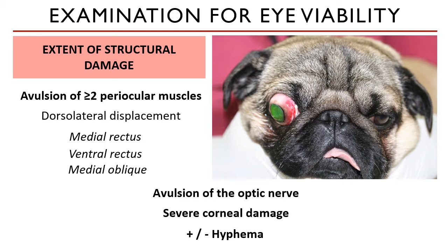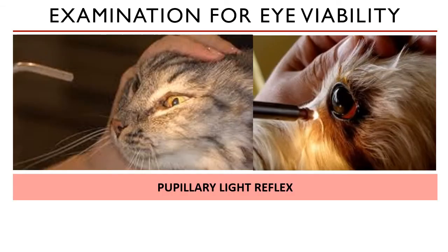The presence of hyphema is also a sign of damage to the ciliary body. Hyphema is the presence of blood inside the eye — you can actually see it from the outside; if you shine a light and all you see is red, that is a bad sign and points to a poor prognosis for eye viability. Assessing eye viability also entails checking the pupillary light reflex, which is a normal physiologic response to light striking the retina.